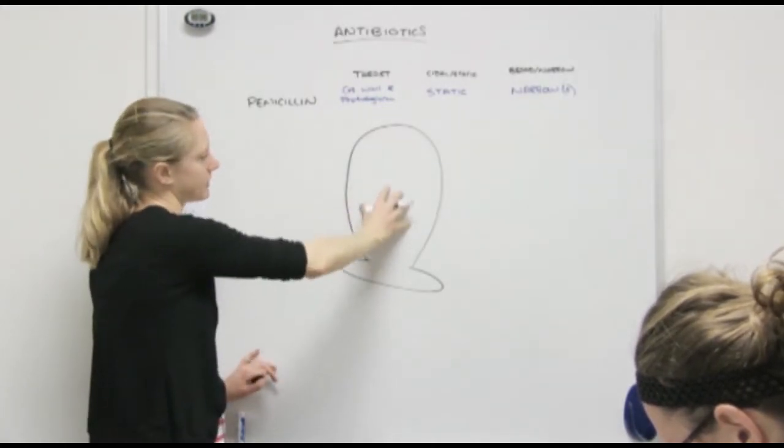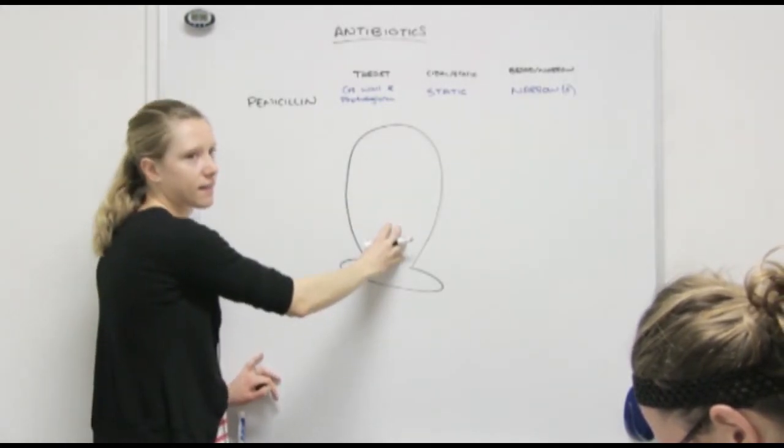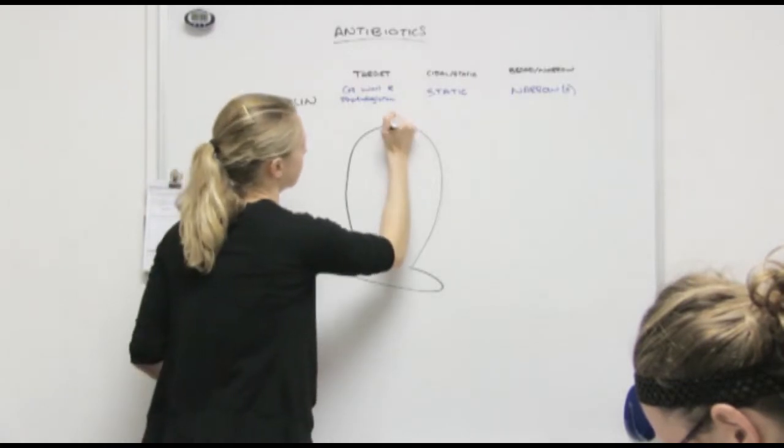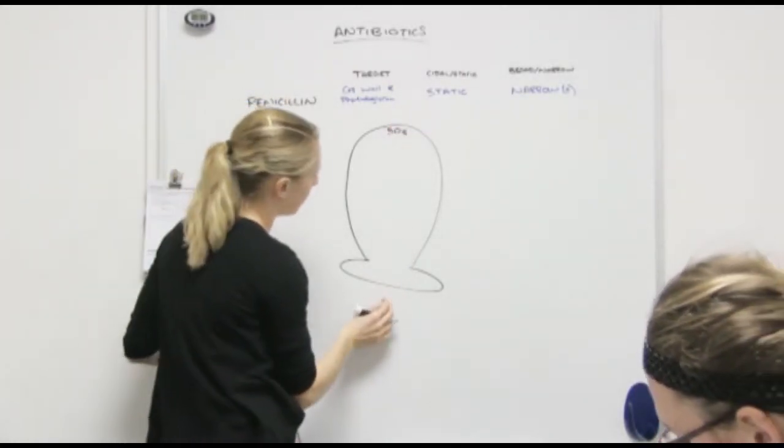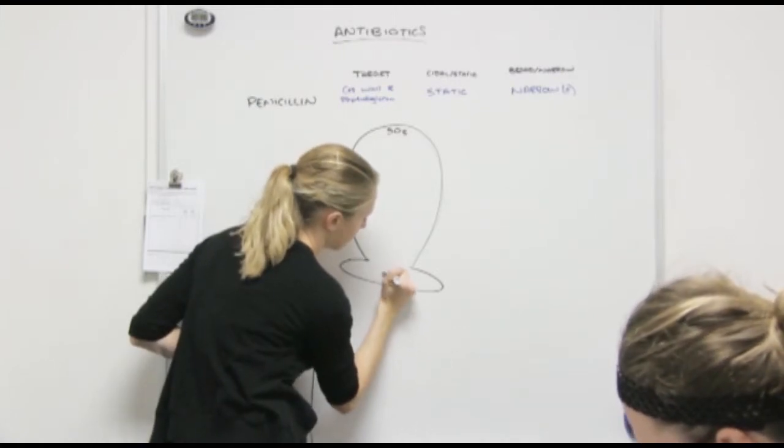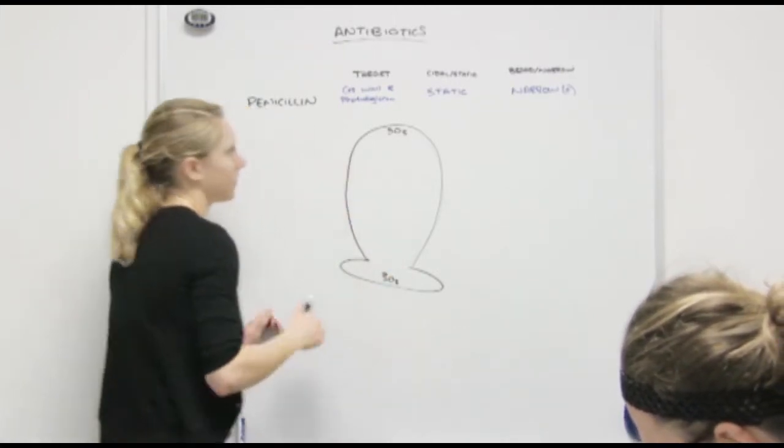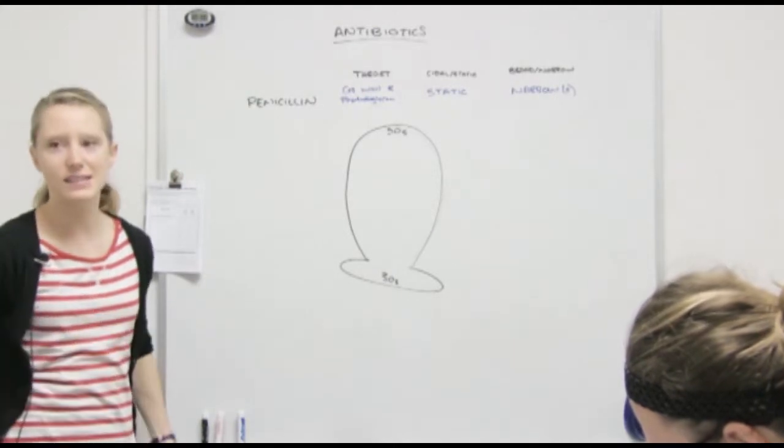What is this top portion called? The big subunit. It's 50S. 50S. Yes. What's the small subunit? 30S. 30S. Do you guys know what the whole thing is? 70S. 70S.